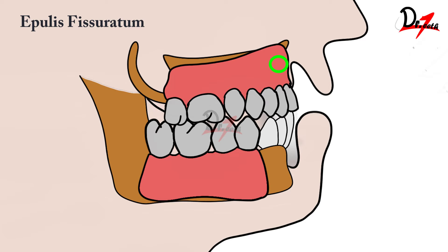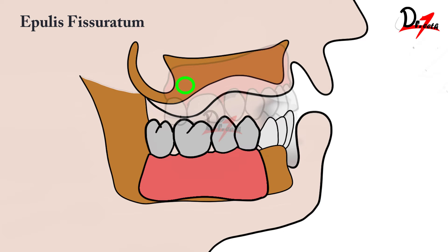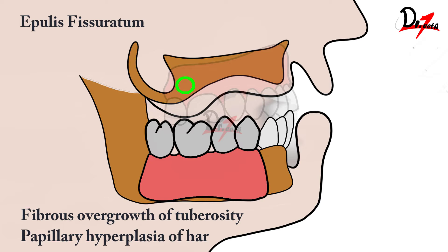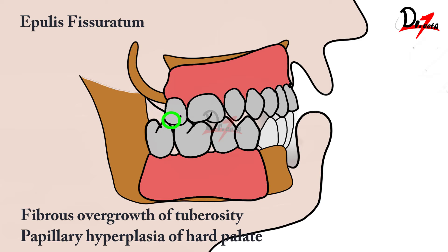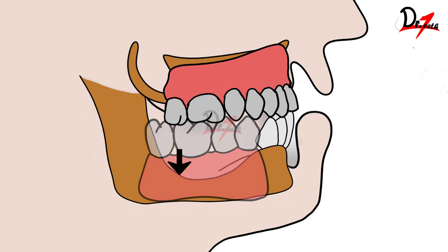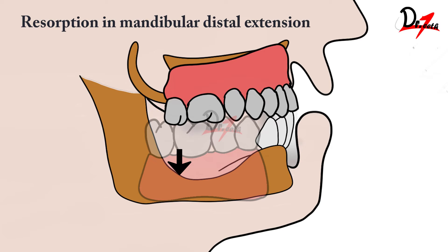Because of the negative pressure posteriorly, the posterior tuberosities will start growing — there will be fibrous overgrowth of the tuberosity area. In addition, there can be papillary hyperplasia of the hard palate. We can now see how the occlusal plane has tilted, so the forces on the distal extension denture bases will increase, leading to resorption in the mandibular distal extension area.